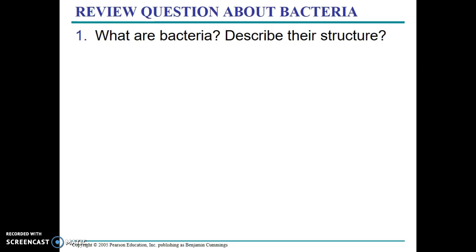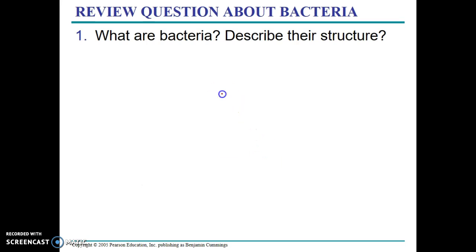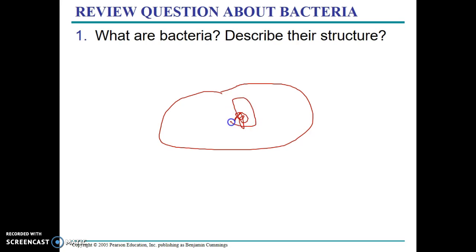Just to review, bacteria are prokaryotic organisms. Because they are prokaryotic, they are a simple cell, meaning they have no nucleus and no other organelles. They simply have a cell membrane, their DNA loosely in their cytoplasm, ribosomes, and cytoplasm inside the cell. Because they are simplistic cells, they can be transformed relatively easily.